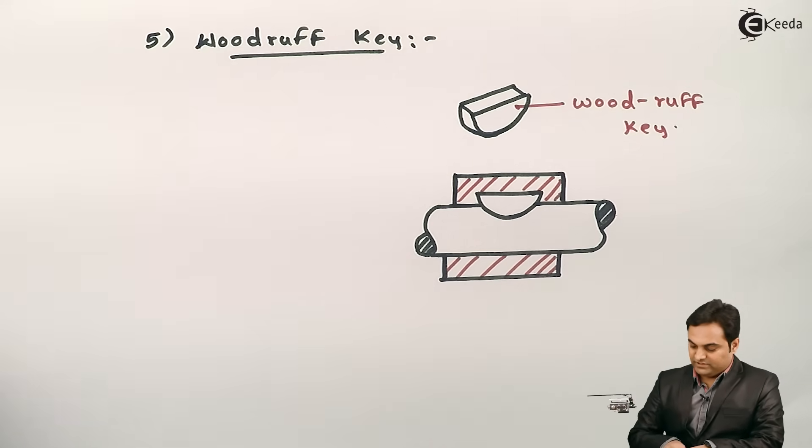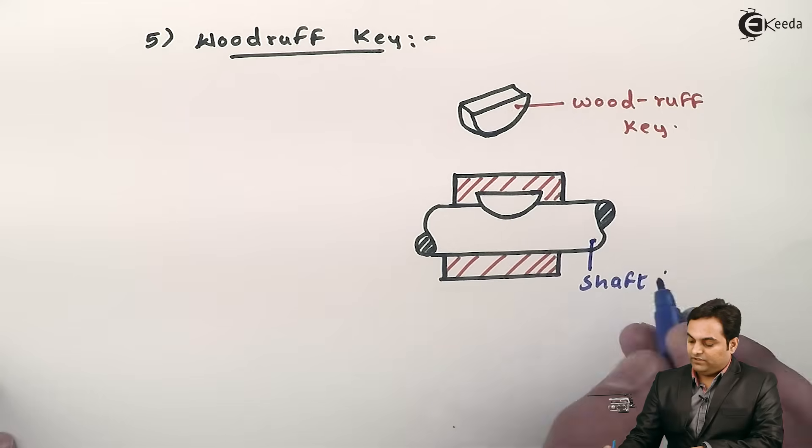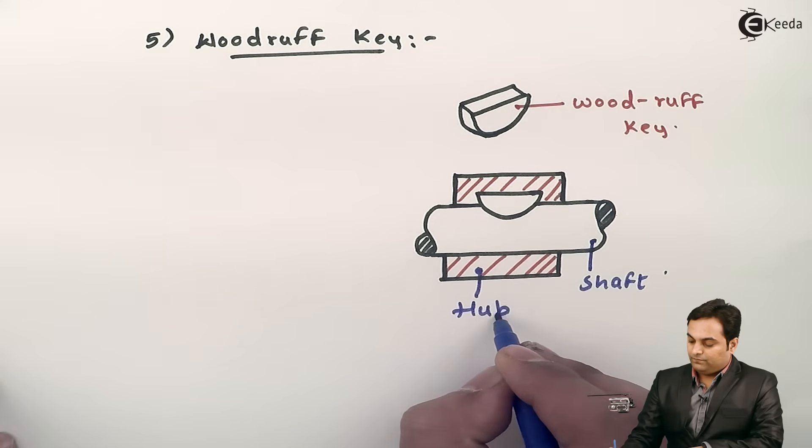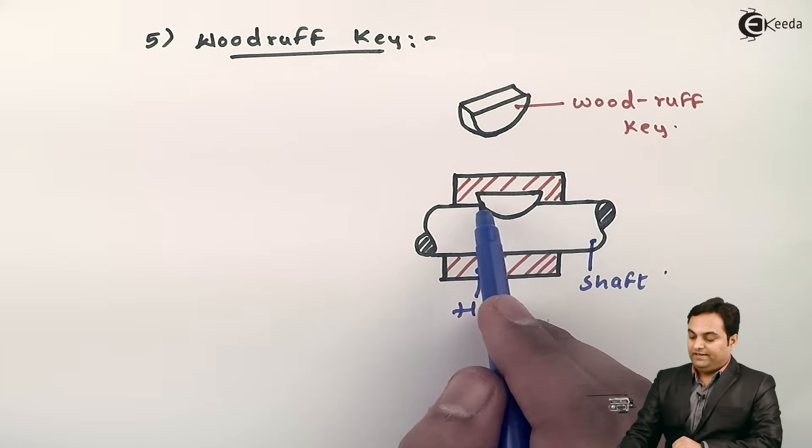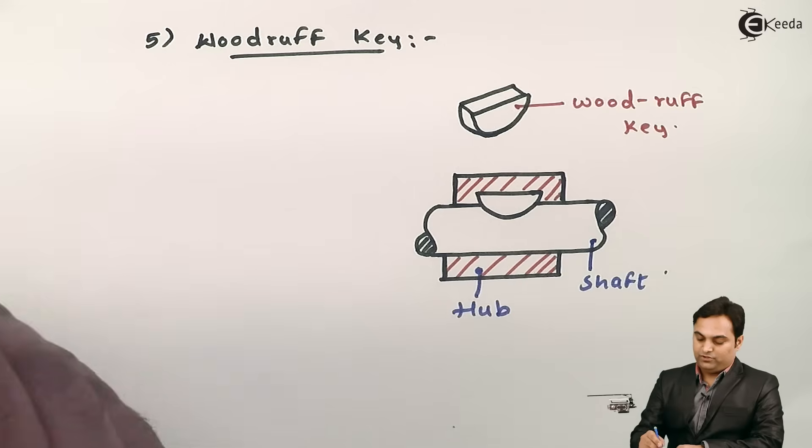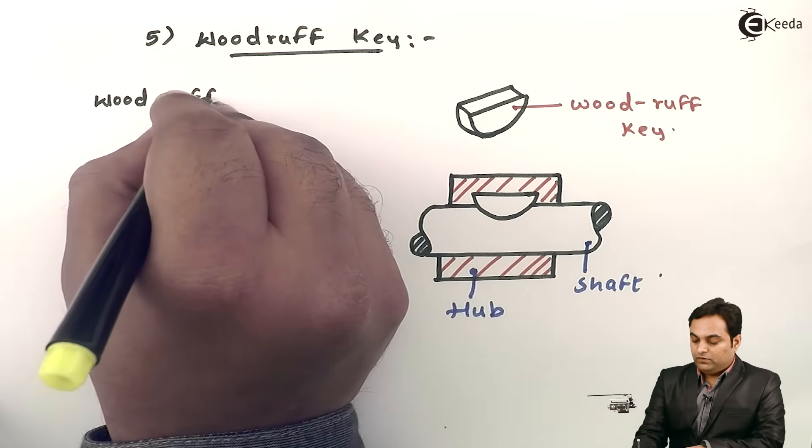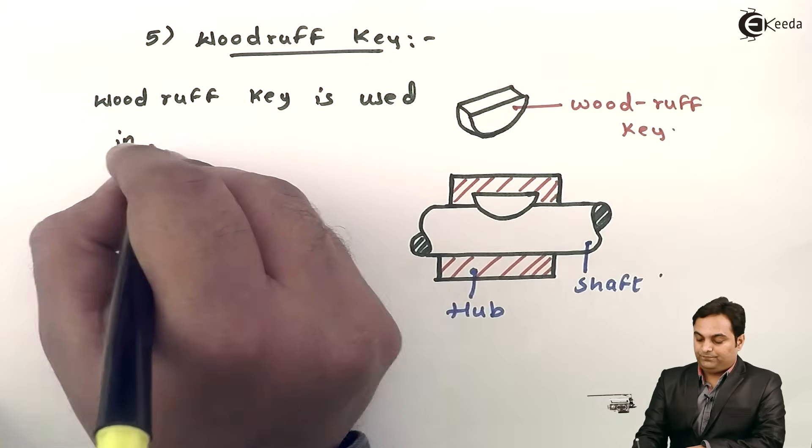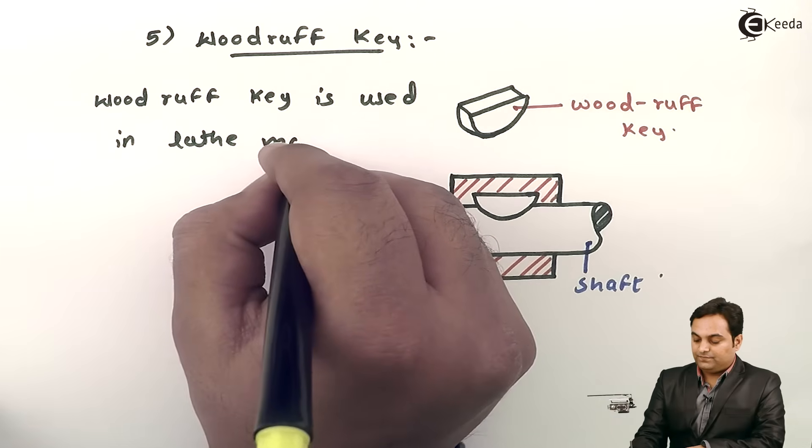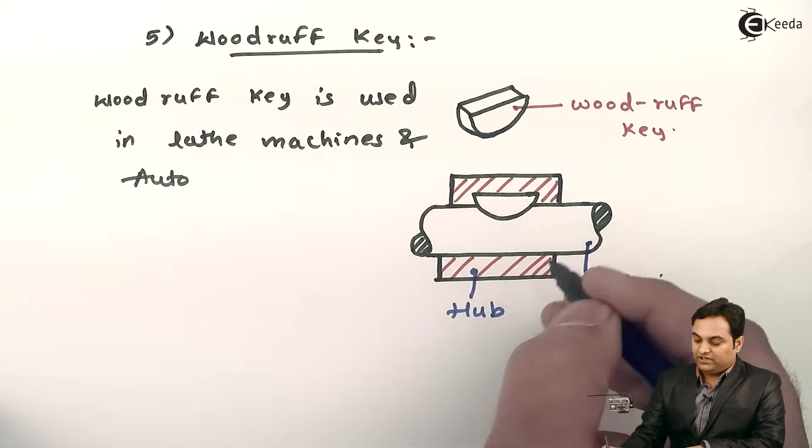Here, as I can explain in this diagram, this is the shaft and here we have hub. So Woodruff key is in this semicircular disc form and it is inserted. Because of this, even the groove which is made in the shaft should be of a special shape. So Woodruff key is used in lathe machines and automobiles—such kind of connections are used.